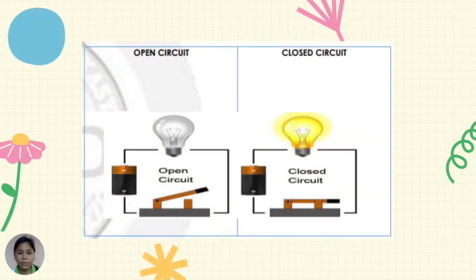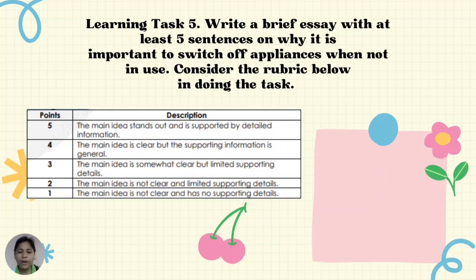Here is an example of a drawing for that activity. For learning task number 5: write a brief essay with at least 5 sentences on why it is important to switch off appliances when not in use. Consider the rubric: 5 points, the main idea stands out and is supported by detailed information; 4 points, the main idea is clear but supporting information is general; 3 points, the main idea is somewhat clear but has limited supporting details; 2 points, the main idea is not clear and has limited supporting details; and 1 point, the main idea is not clear and has no supporting details.